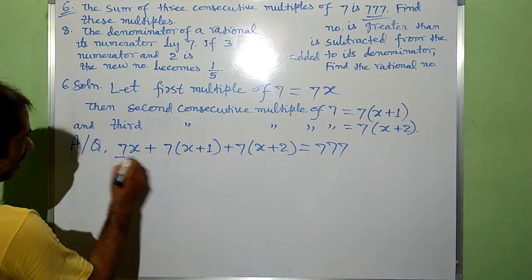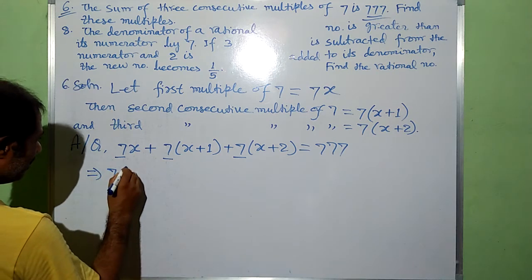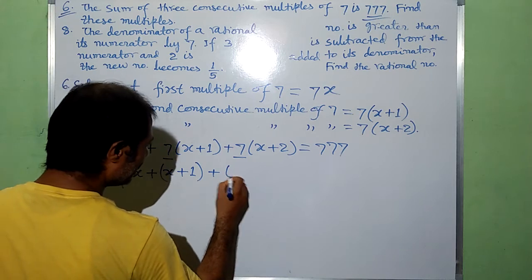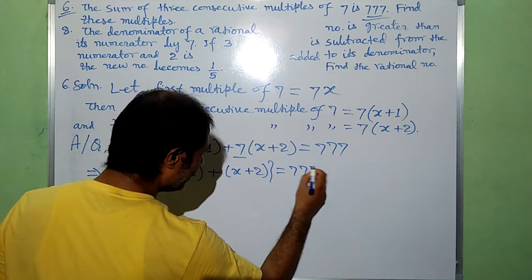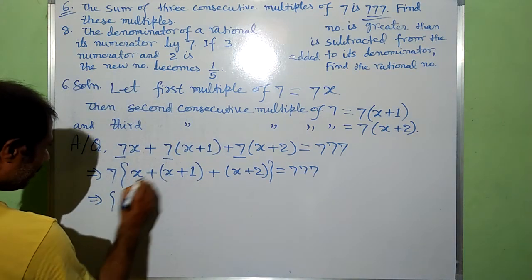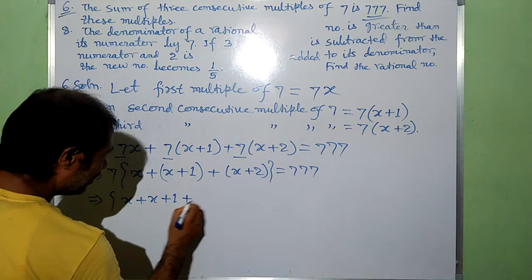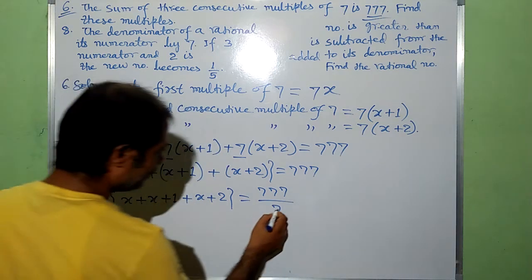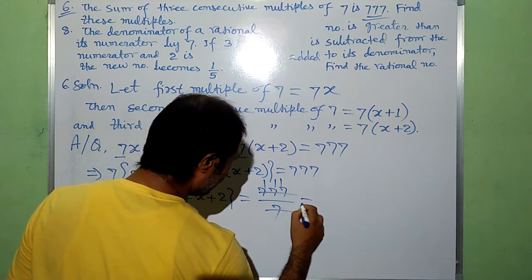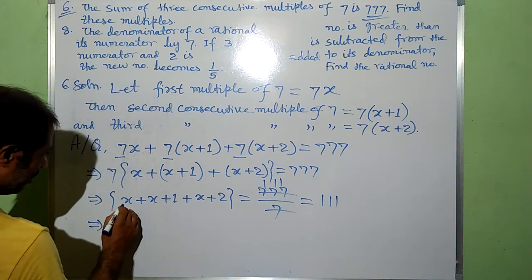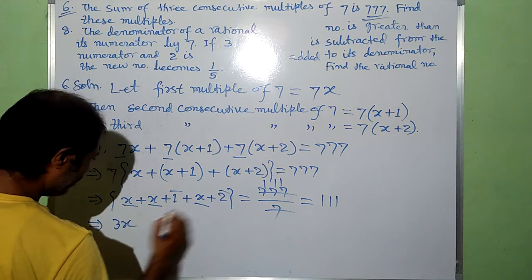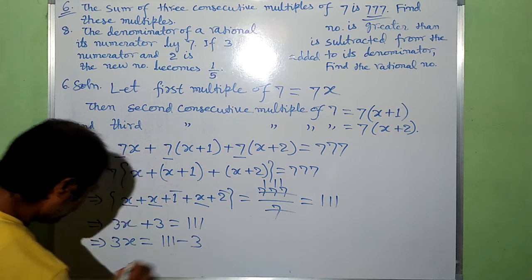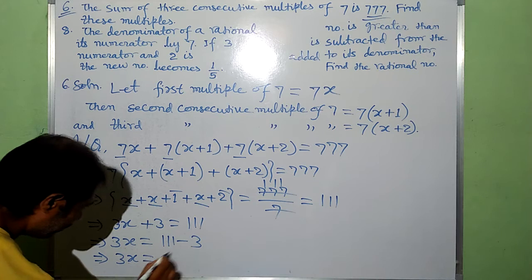Here we can observe that seven is common in all three terms. This implies that 7 into x plus x plus 1 plus x plus 2 equals 777. Dividing both sides by 7, we have x plus x plus 1 plus x plus 2 equals 111. This gives us 3x plus 3 equals 111, which implies 3x is equal to 111 minus 3, so 3x is equal to 108.